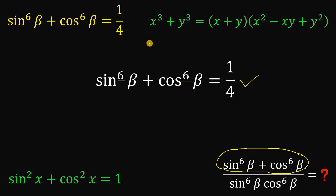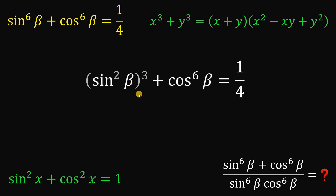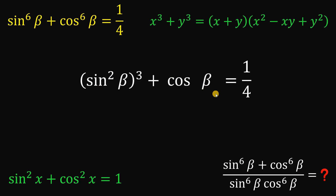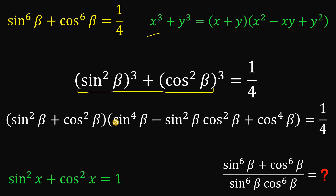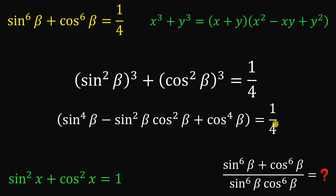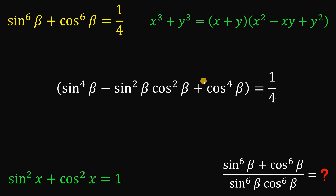Let's rewrite this in the form of sum of two cubes. Sine raised to the power of 6 of beta can be rewritten as sine squared beta raised to the power of 3, and cosine raised to the power of 6 of beta can be rewritten as cosine squared beta raised to the power of 3. Now applying the sum of two cubes identity, we have sine squared beta plus cosine squared beta, multiplied by sine to the fourth power of beta minus sine squared beta times cosine squared beta plus cosine to the fourth power of beta, equals one-fourth. Notice that sine squared beta plus cosine squared beta is the Pythagorean identity, so it is equivalent to 1.